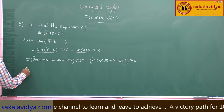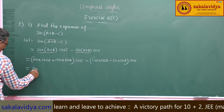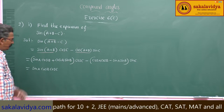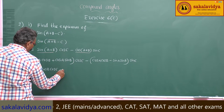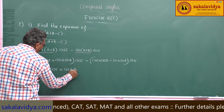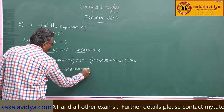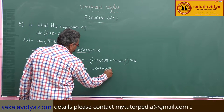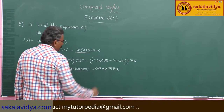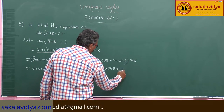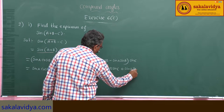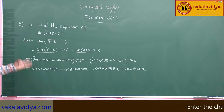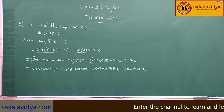Substituting and simplifying: sin(a + b - c) = sin a cos b cos c + cos a sin b cos c - cos a cos b sin c - sin a sin b sin c. This is the expansion of sin(a + b - c).